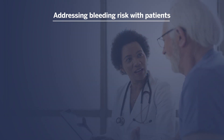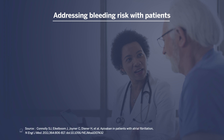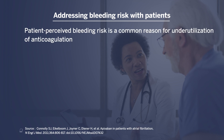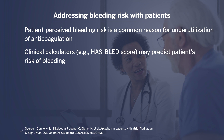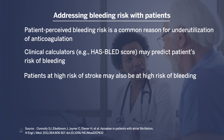Whenever a patient has AFib and the decision is made to start anticoagulation, one must be prepared to discuss the bleeding risk with the patient. Patient concerns regarding bleeding risk are a common reason for underutilization of anticoagulation and therefore need to be addressed. There are clinical calculators to facilitate that discussion, such as the HAS-BLED score. However, many of the factors in the HAS-BLED score are also in the CHADS-VASc score, meaning that many patients at high risk of stroke are often also at high risk of bleeding, making it difficult to weigh those two issues.